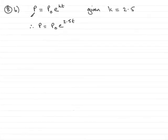Now in part 8b, we already know that p equals p₀e^(kt), and we're given now that k equals 2.5. So if we substitute 2.5 in for k, we end up with p equaling p₀e^(2.5t).